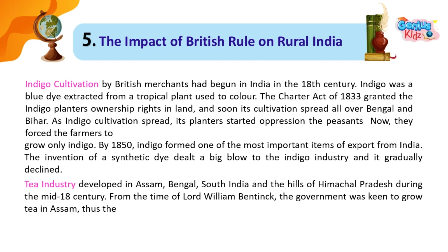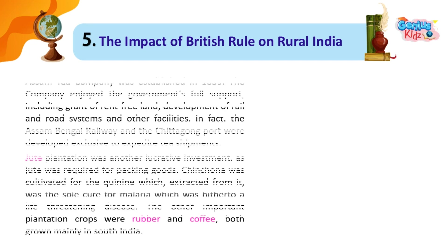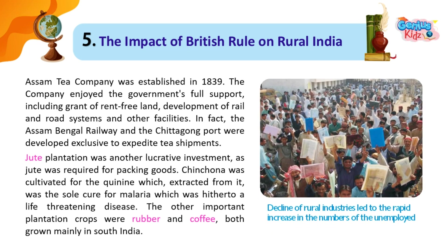The invention of a synthetic dye dealt a big blow to the indigo industry and it gradually declined. Tea industry developed in Assam, Bengal, South India and the hills of Himachal Pradesh during the mid-18th century. From the time of Lord William Bentinck, the government was keen to grow tea in Assam. The Assam Tea Company was established in 1839. The company enjoyed the government's full support, including grant of rent-free land, development of rail and road systems and other facilities. The Assam-Bengal Railway and the Chittagong Port were developed exclusively to expedite tea shipments.